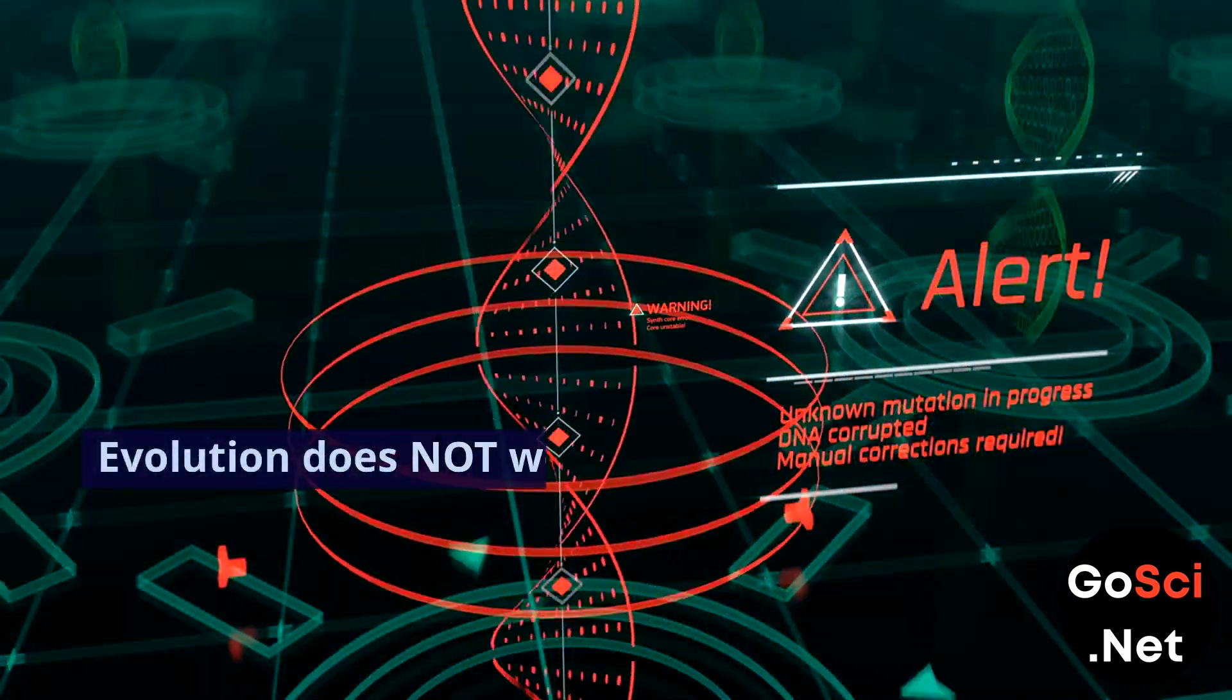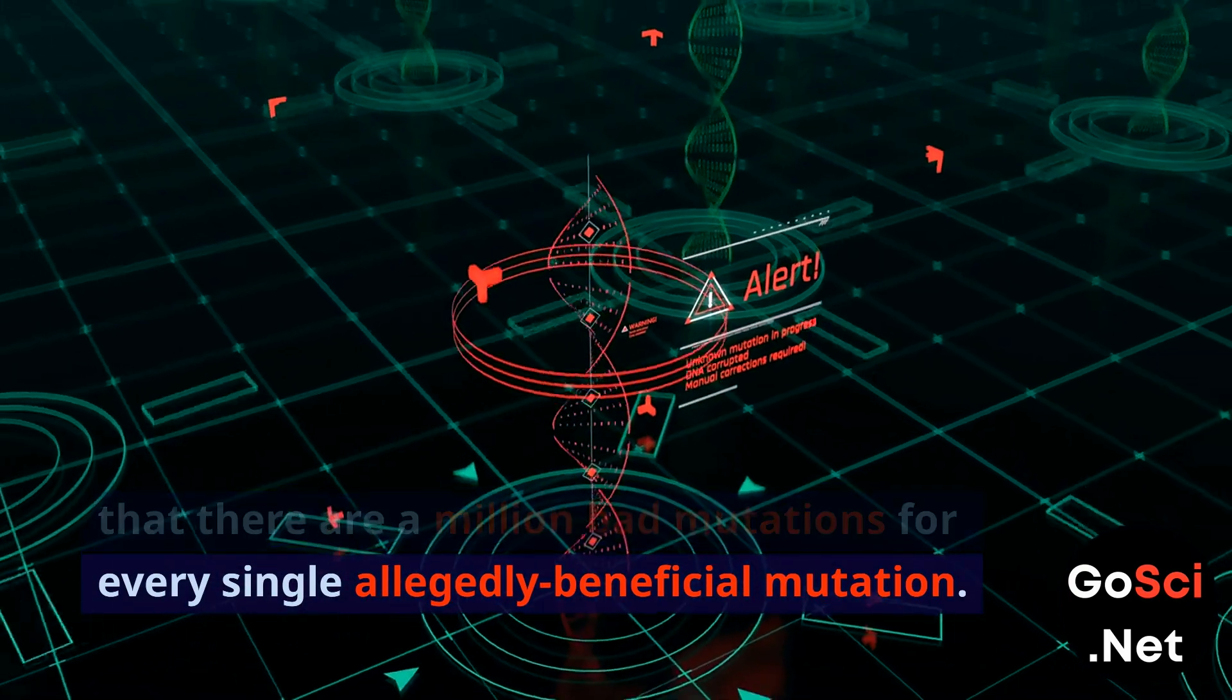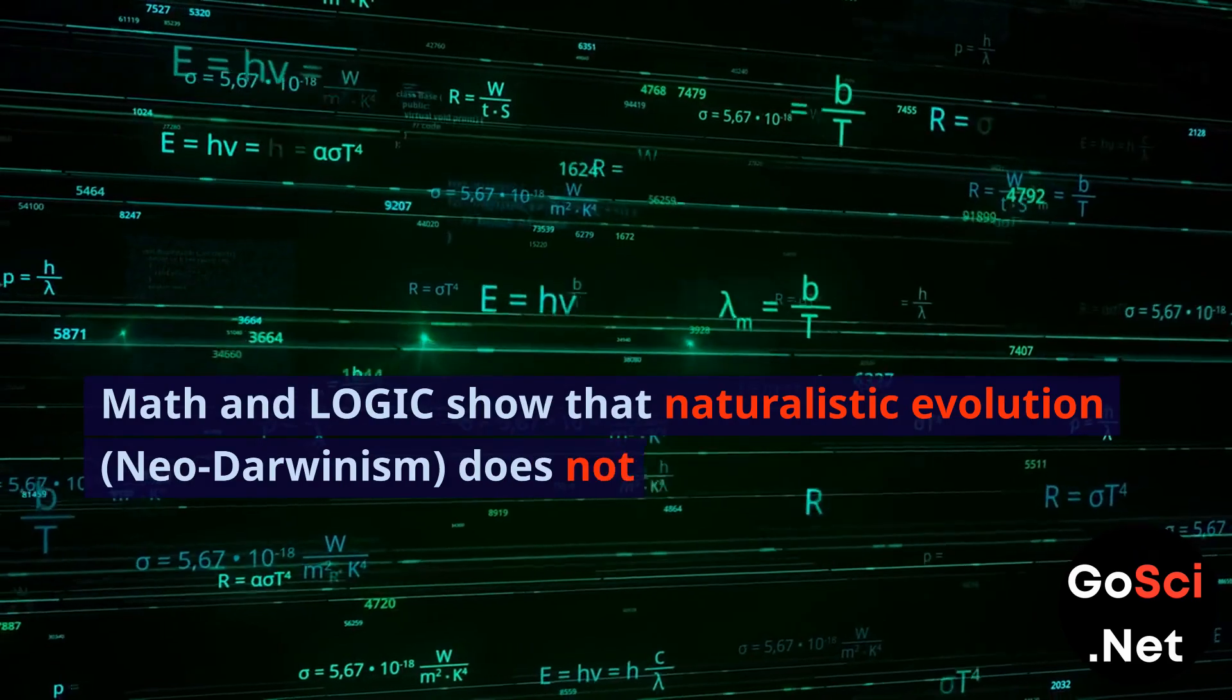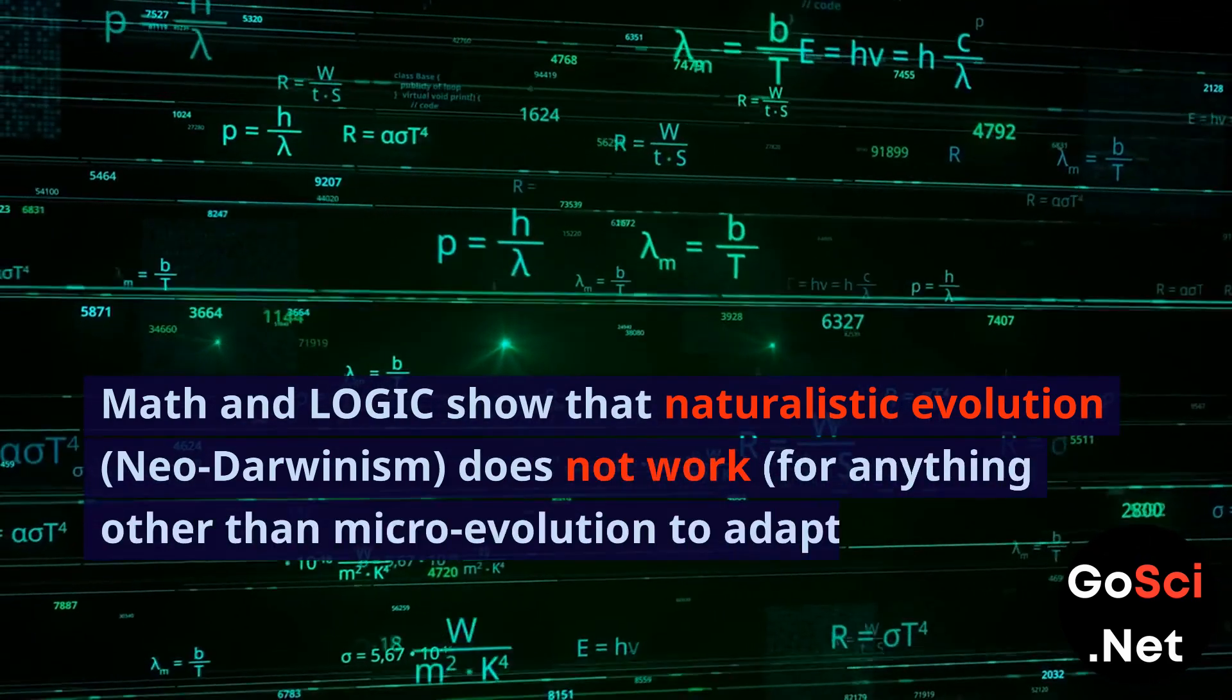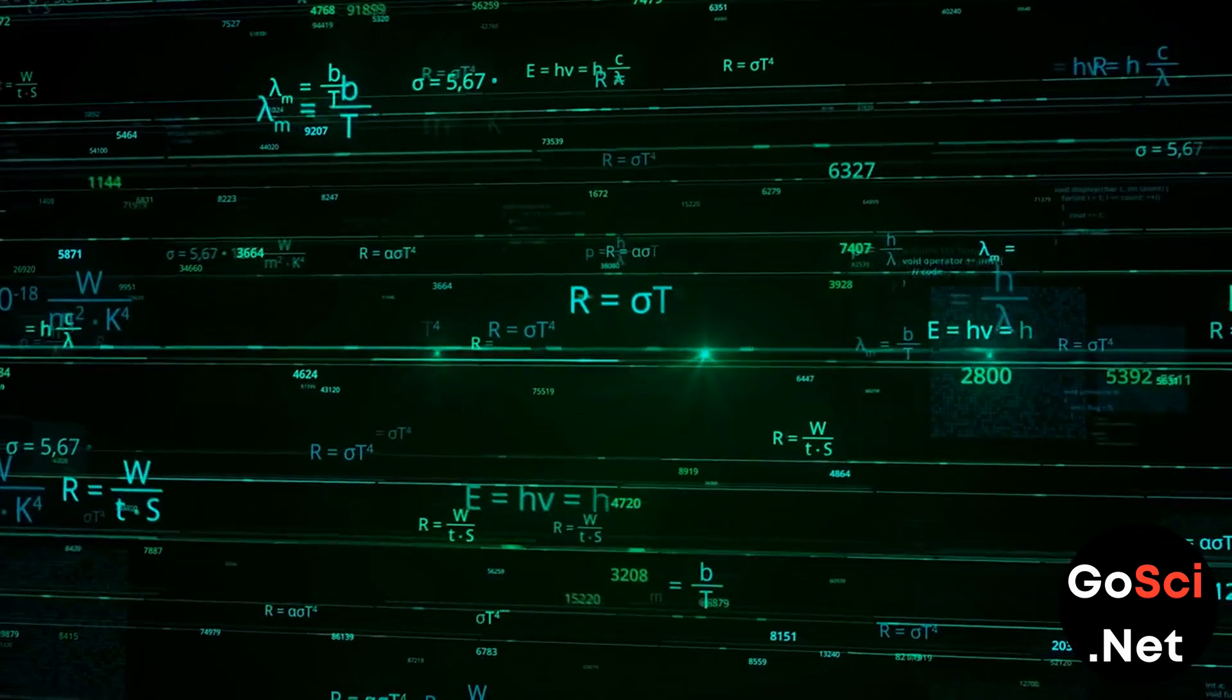Conclusion. Evolution does not work for the simple reason that there are a million bad mutations for every single allegedly beneficial mutation. Math and logic show that naturalistic evolution, Neo-Darwinism, does not work for anything other than microevolution to adapt a species to its environment.